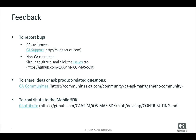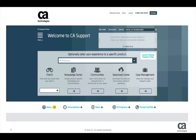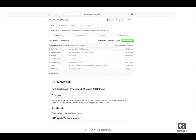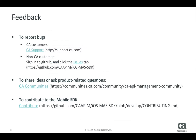To report bugs, if you're a CA customer, go to CA Support. If you're not a CA customer, you can report bugs by signing in at GitHub and clicking the Issues tab. To share ideas or ask product-related questions, go to CA Communities.